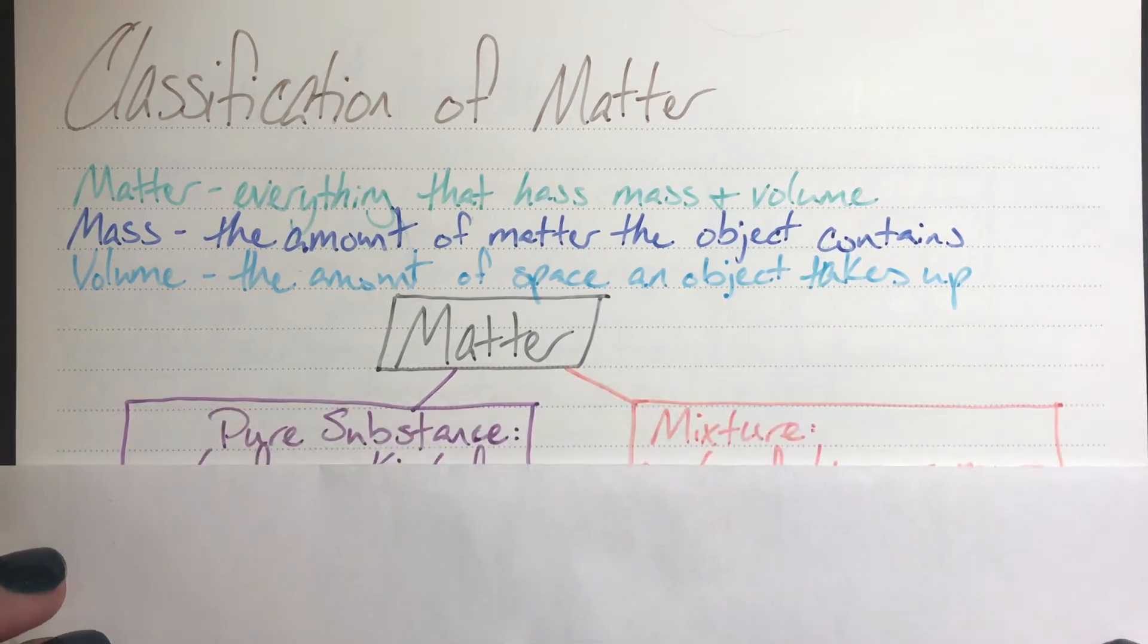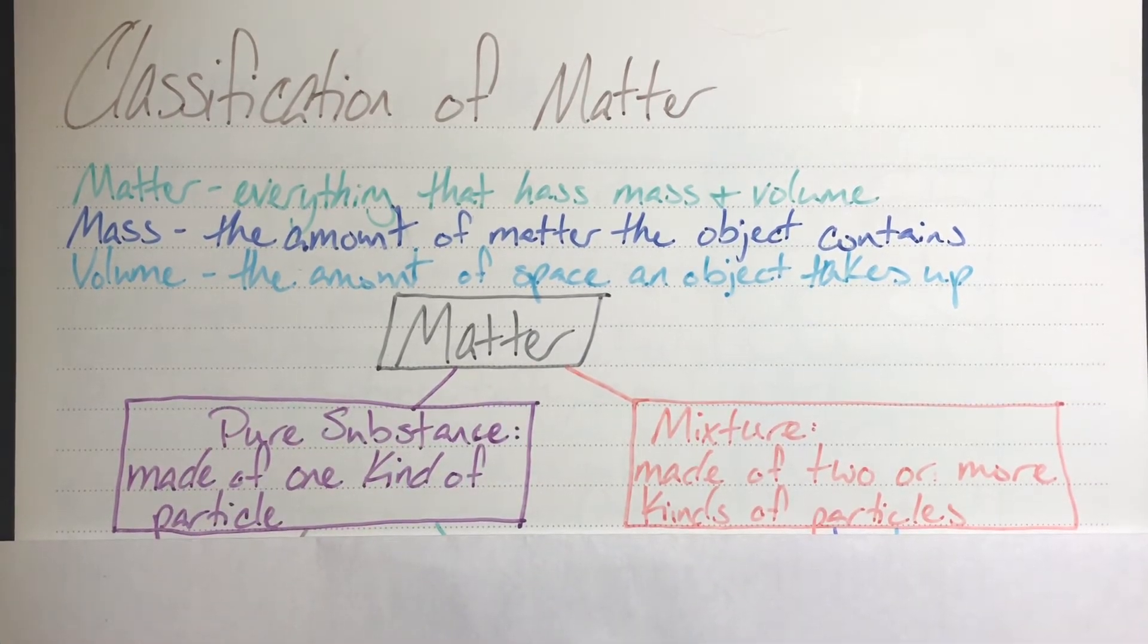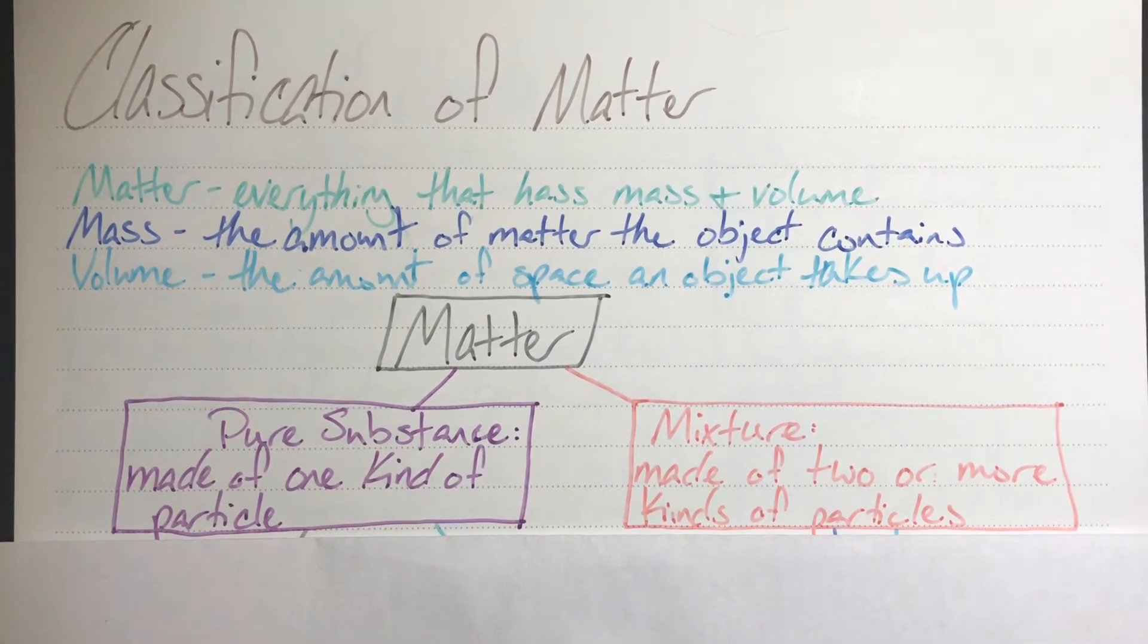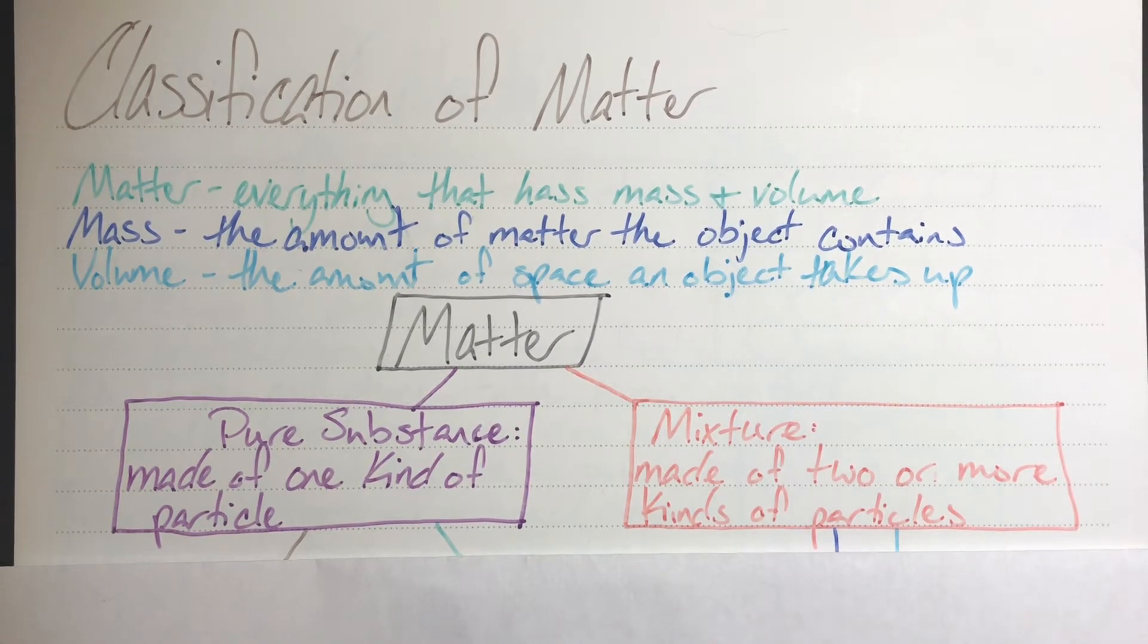Matter can be split into a couple different categories. You can either be what is known as a pure substance or a mixture. We're going to explore pure substances first. Pure substances are made up of one kind of particle exclusively, and mixtures are made up of two or more types of particles.